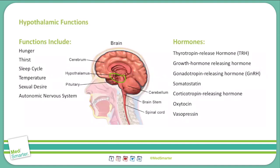Oxytocin and ADH are two hormones in particular that are produced in the hypothalamus but released in the posterior pituitary, as opposed to being synthesized and produced in the hypothalamus itself.